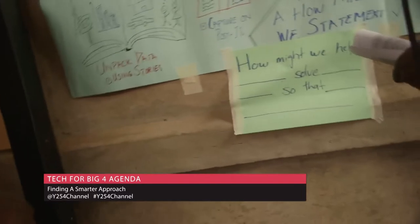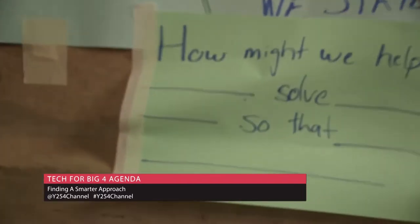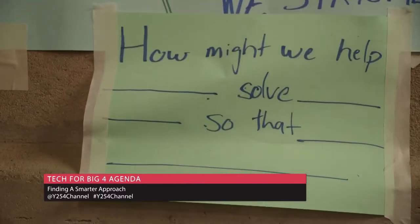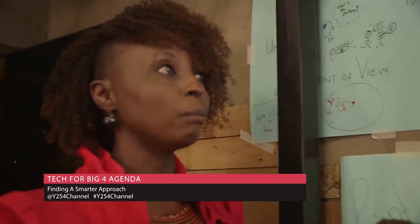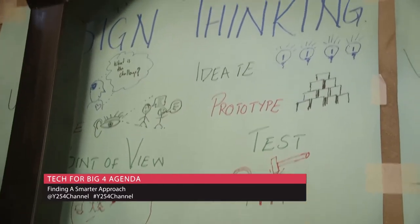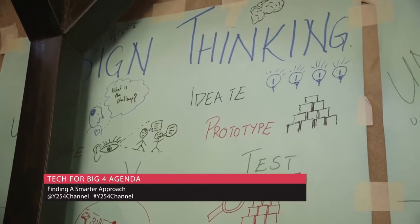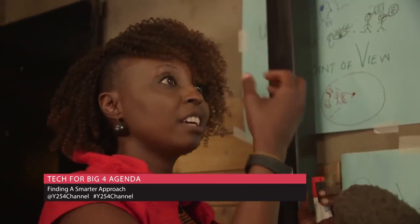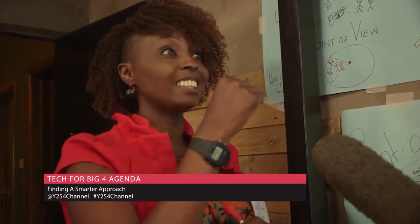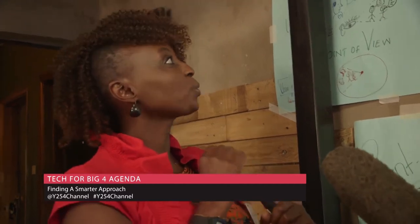From 'how might we,' we move to actually doing it — we start ideating as a team. We do it individually first through silent brainstorming. After silent brainstorming, you explain the thinking behind your idea. It's really key to build on each other's ideas. We have a strong rule: you cannot say no. You say 'yes, and.'